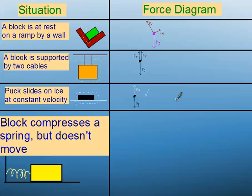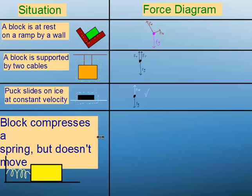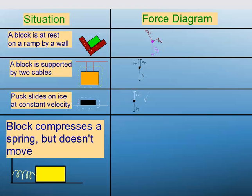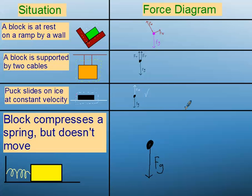All right. This is where they're going to start getting a little weird. In this case, we've got a block that's compressing a spring. But the block doesn't move even though the spring's pushing on it. So on this one, like always, the block has a downward force of gravity upon it. If we look at the other forces in there, there's kind of more than meets the eye.